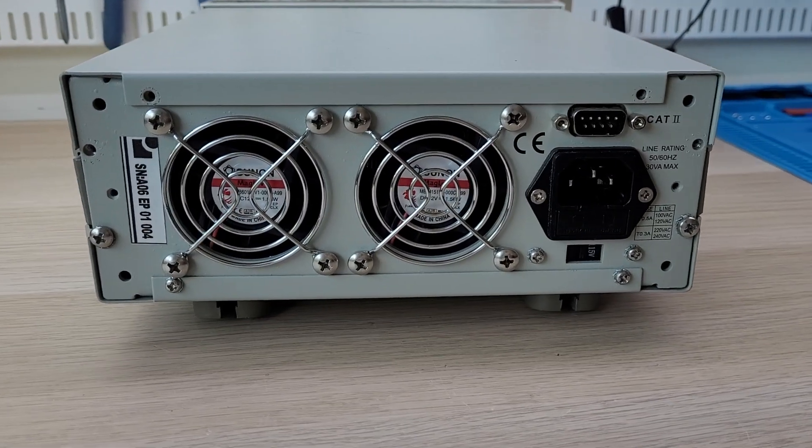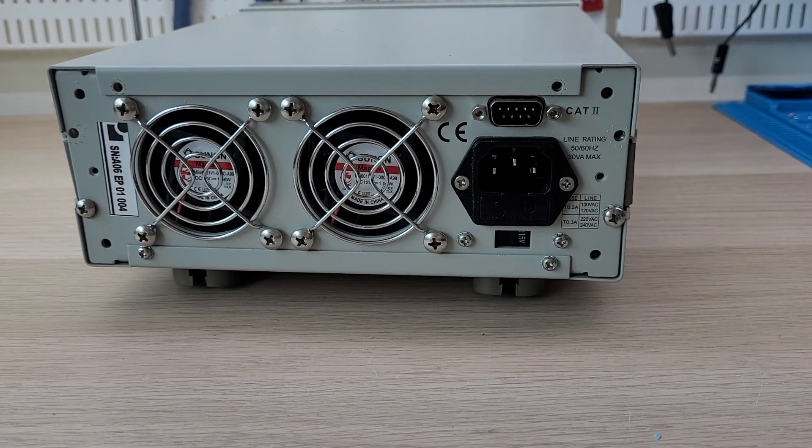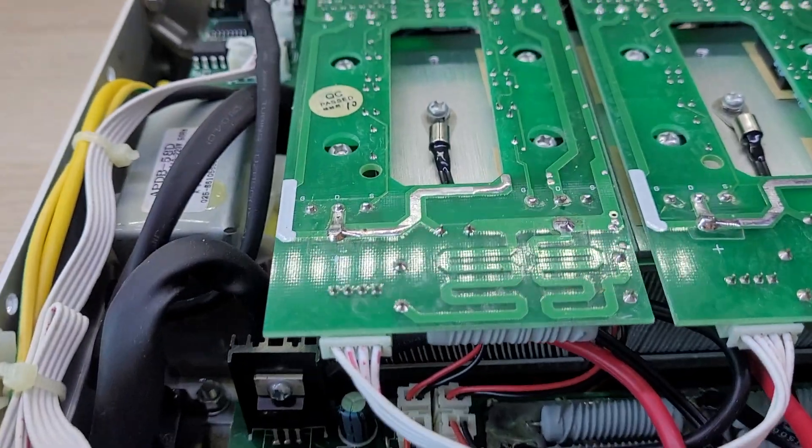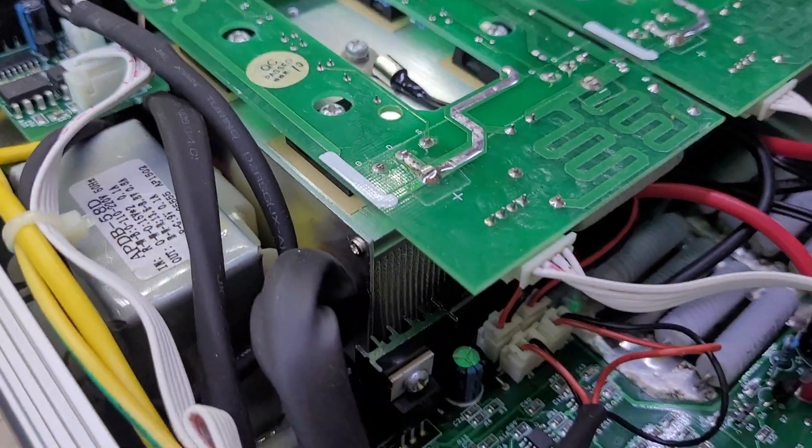Electronic load is an electronic device designed to simulate different operating modes of load while testing power supplies. Electronic load contains stabilizer, current flow and voltage tester as well as a number of other ancillary units.